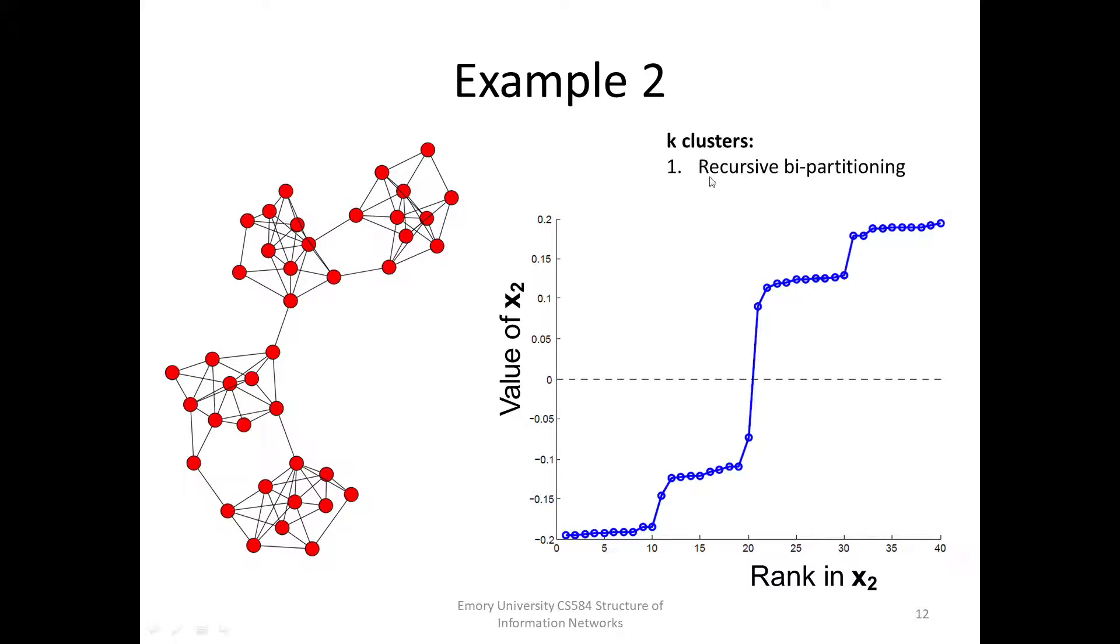Here is another example with obviously more clusters. How do we partition the graph into k clusters? There are two basic approaches. The first choice is recursive bi-partitioning, which means recursively apply the bi-partitioning algorithm in a hierarchical manner. So, we can first cut here, and then here, and then here.